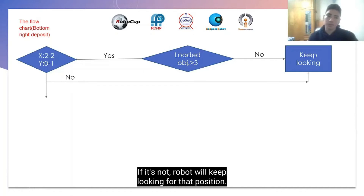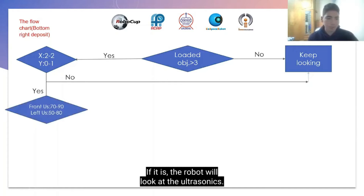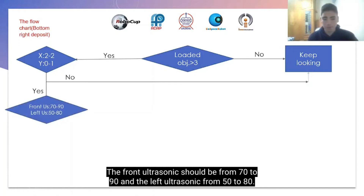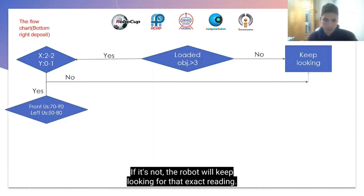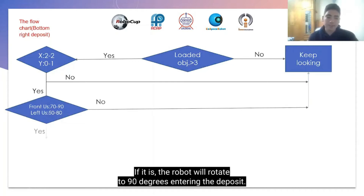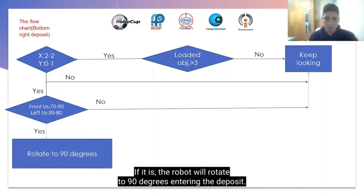If it's not in that position, the robot will keep looking for that position. If it is, the robot will look at the ultrasonics. The front ultrasonic should be from 70 to 90 and the left ultrasonic from 50 to 80. If it's not, the robot will keep looking for that exact reading. If it is, the robot will rotate to 90 degrees, entering the deposit.